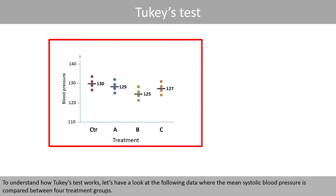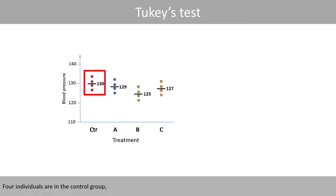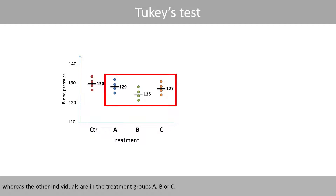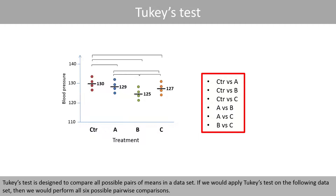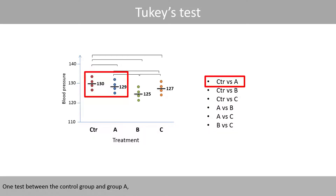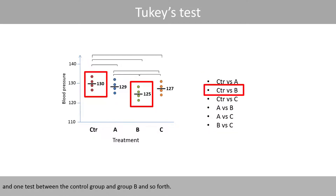To understand how Tukey's test works, let's have a look at the following data where the means of total blood pressure are compared between four treatment groups. Four individuals are in the control group, whereas the other individuals are in the treatment groups A, B, or C. Tukey's test is designed to compare all possible pairs of means in a dataset. If we apply Tukey's test on this dataset, we would perform all six possible pairwise comparisons — one test between the control group and group A, one between the control group and group B, and so forth.